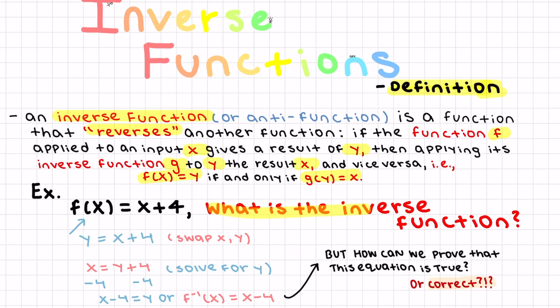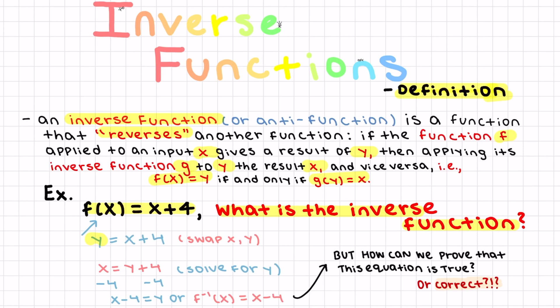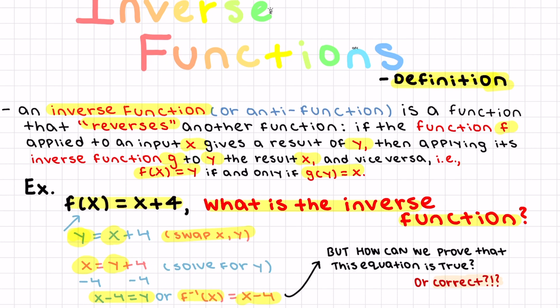Here's an example: what is the inverse function of f(x) = x + 4? Remember that f(x) is y. Since an inverse function switches your y and x values, you swap x and y — so now x is where y was, and y is where x was. Solve for y by doing minus 4 on both sides, and you get x - 4 = y. The proper notation is: the inverse function equals x - 4. How can we prove that this is correct? We'll get into that further in this lesson.